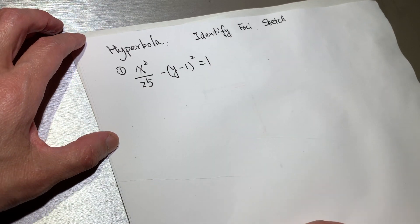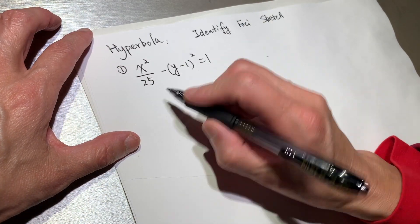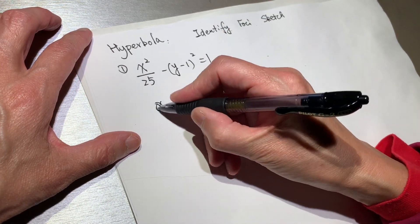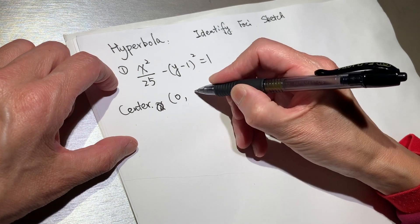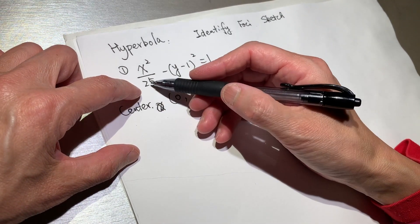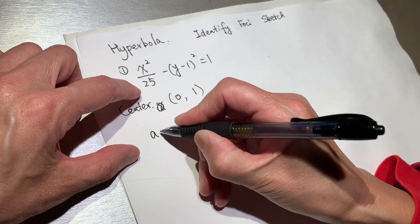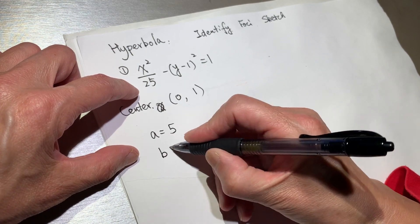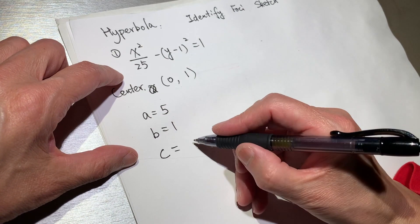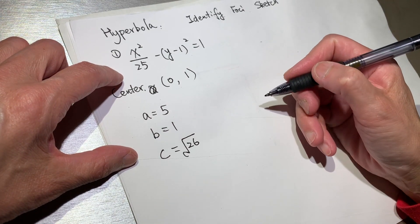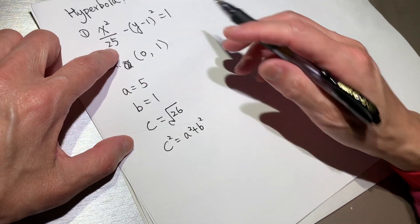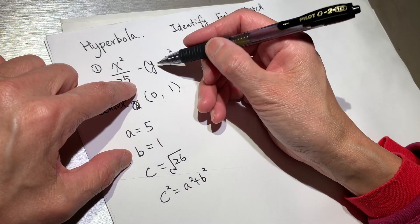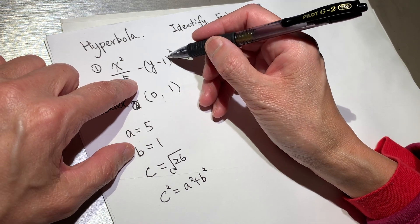So for this one, what are the four key features? The center should be: x is 0. Let me write it down. Center is (0, 1). And a equals 5, b equals 1, c equals root 26, because c squared equals a squared plus b squared. And y minus 1, you can see it as y minus 1 over 1.